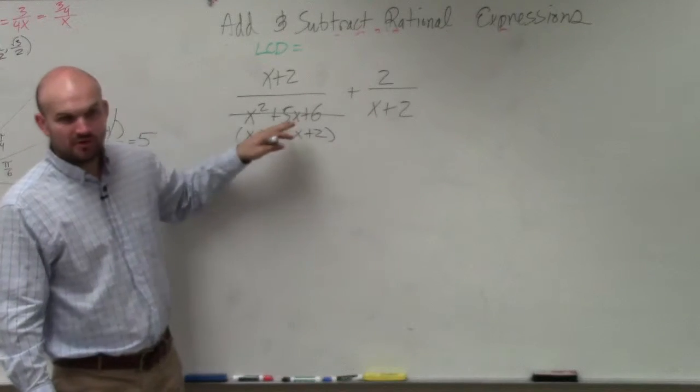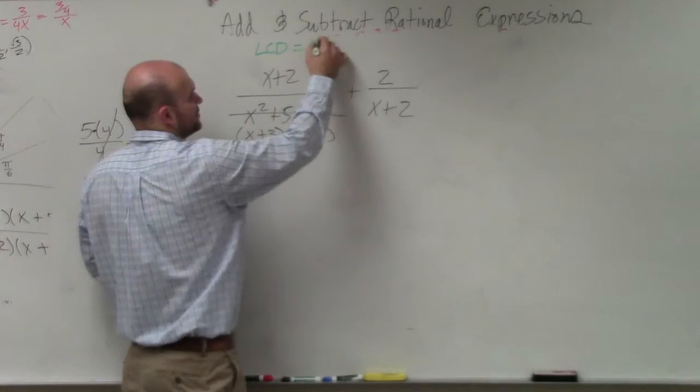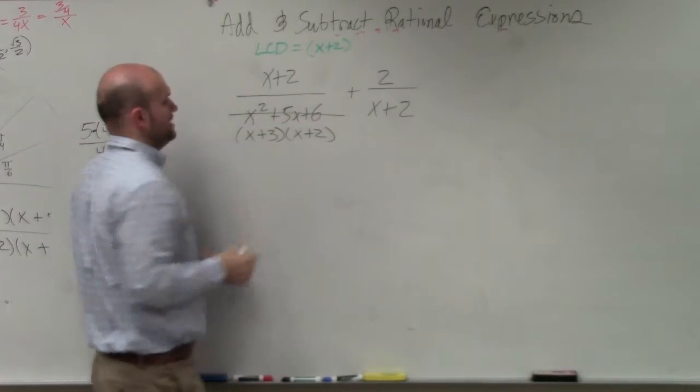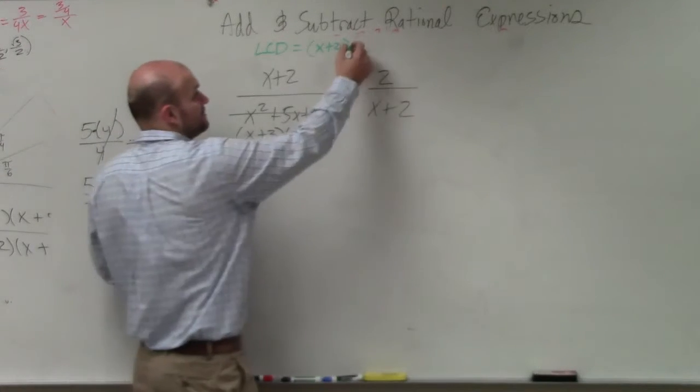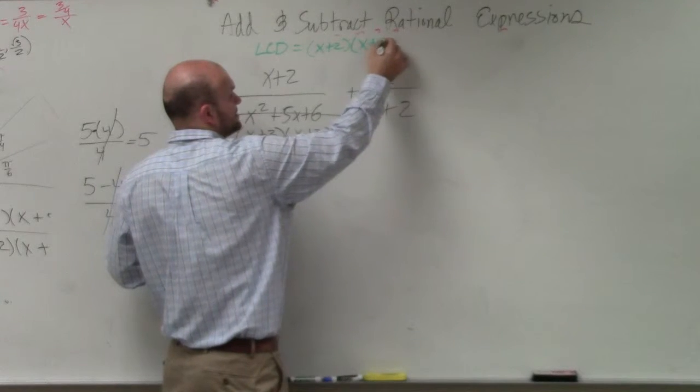Well, we have x plus 2 on both of them, so we know that the LCD has to include x plus 2. But we also need x plus 3 divided into that as well. So the LCD is going to be x plus 2 times x plus 3.